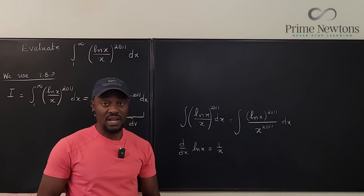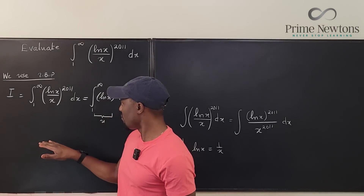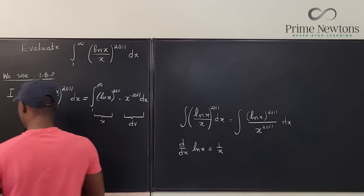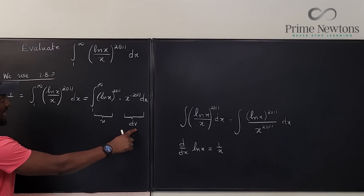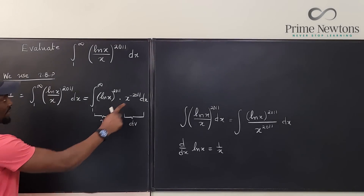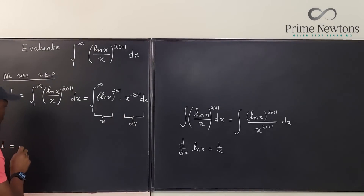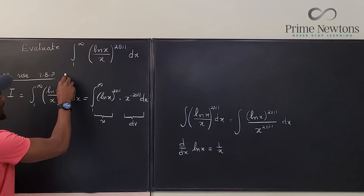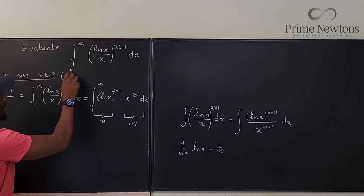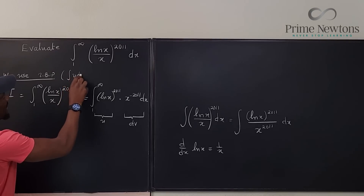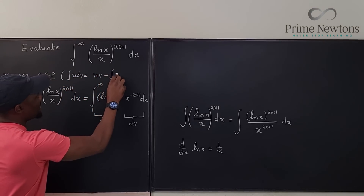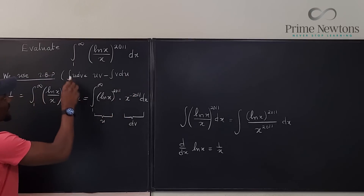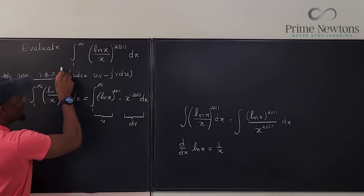I need space, so let me do all the rough work on this side and then come back. So our I will be equal to the integral of u dv. From the formula for integration by parts, we know that the integral of u dv equals uv minus the integral of v du. This is the formula we're going to be using.